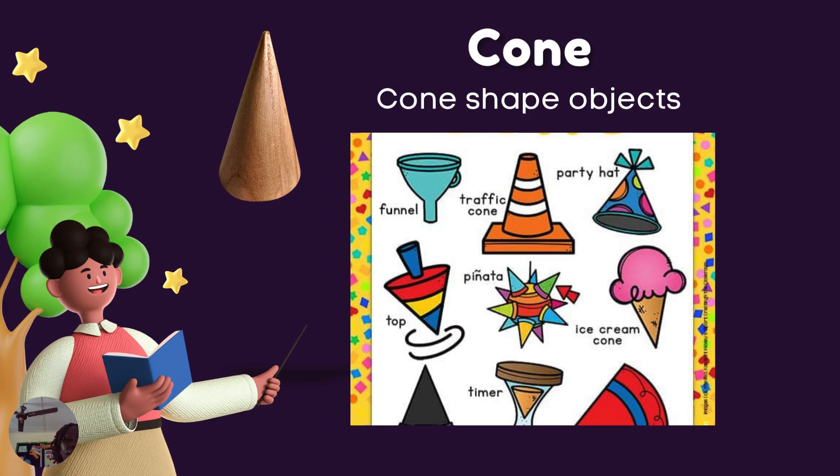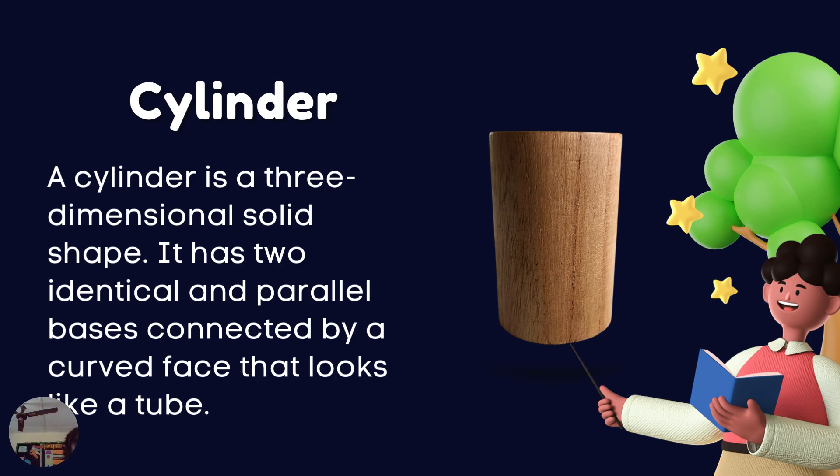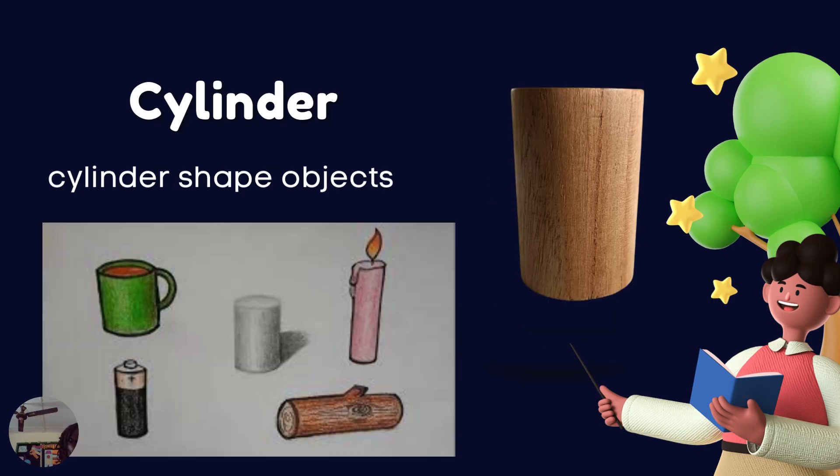Another example of a three-dimensional shape is a cylinder. A cylinder is a three-dimensional solid shape. It has two identical and parallel bases connected by a curved face that looks like a tube. Examples of cylinder-shaped objects include cups, cans, wood, and batteries.